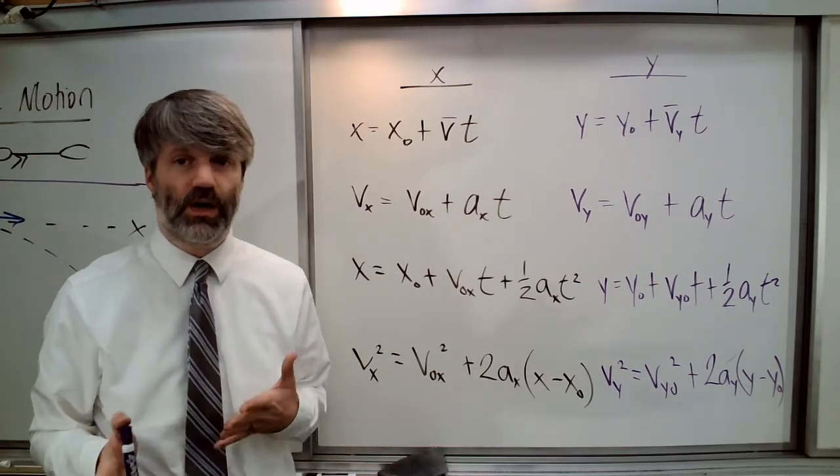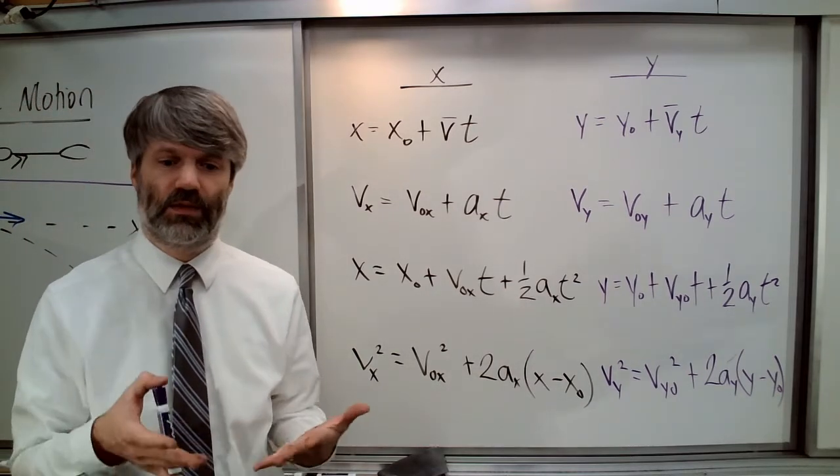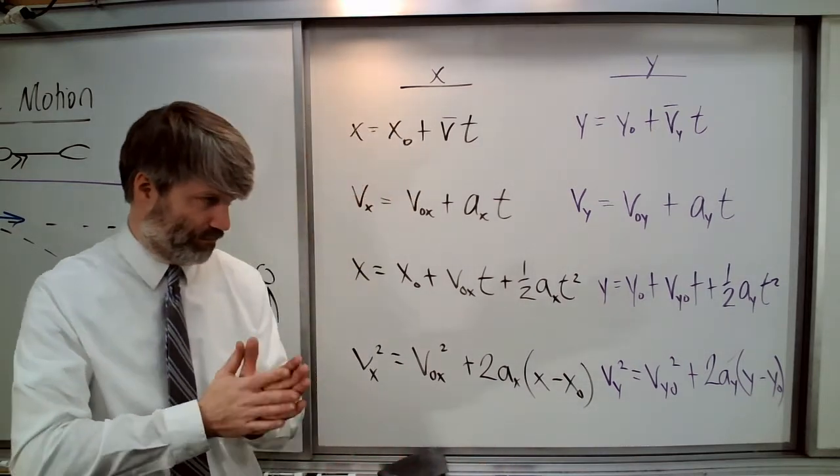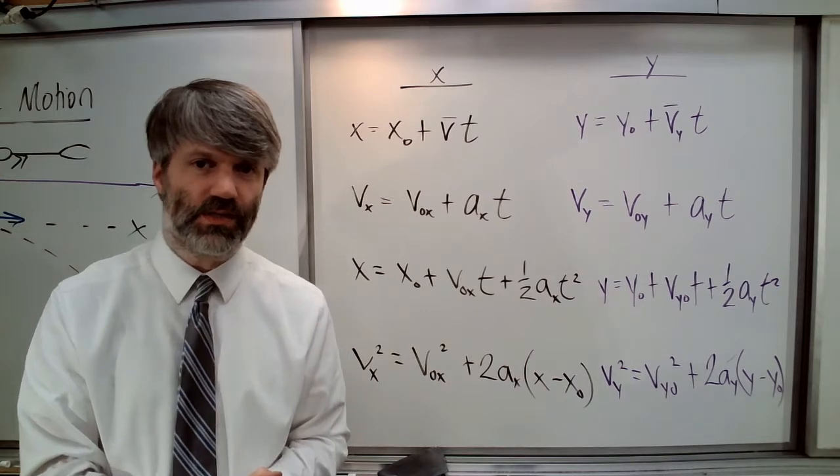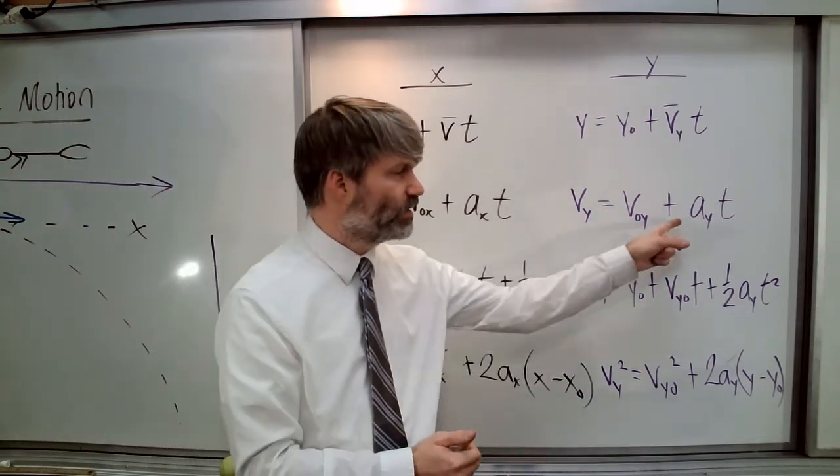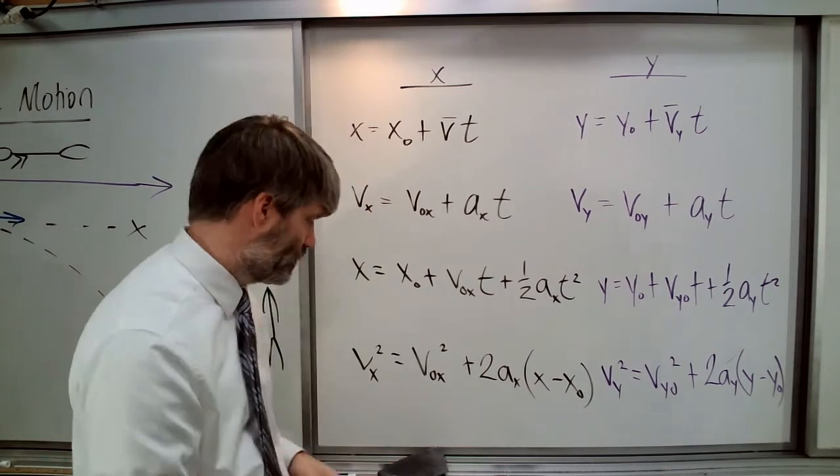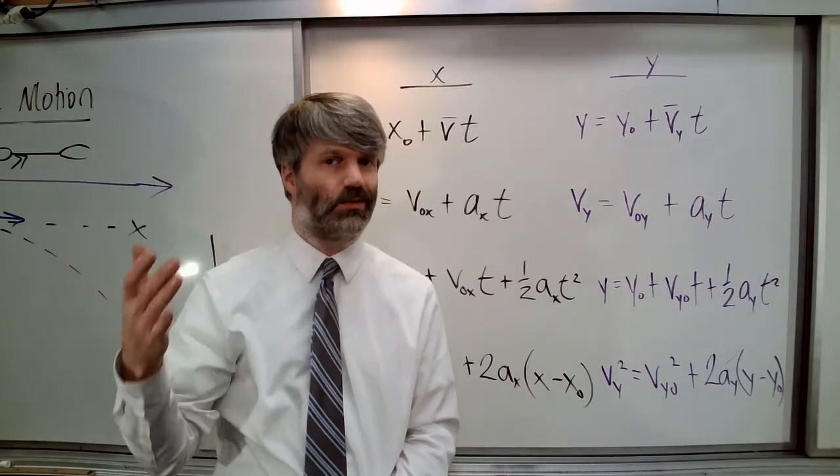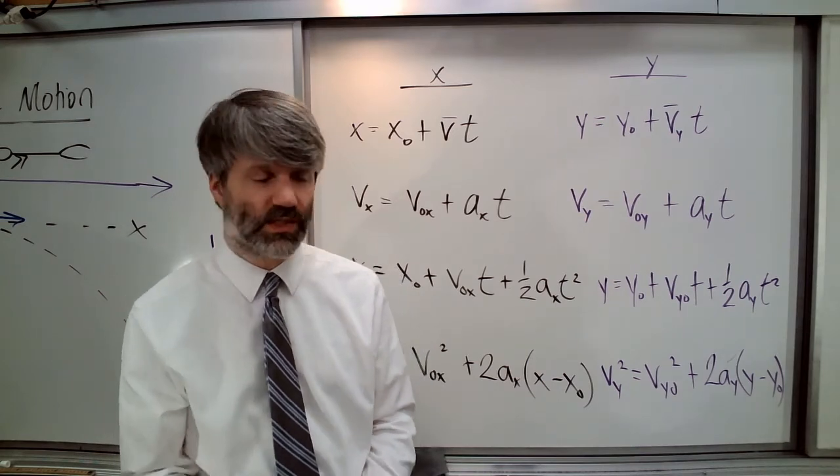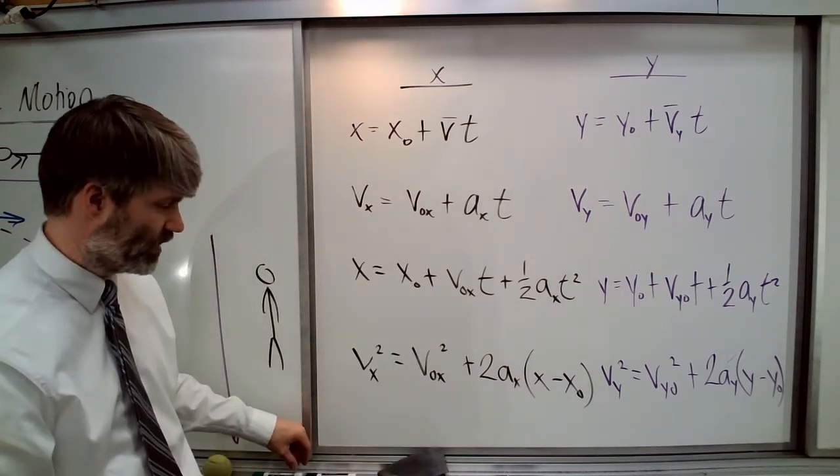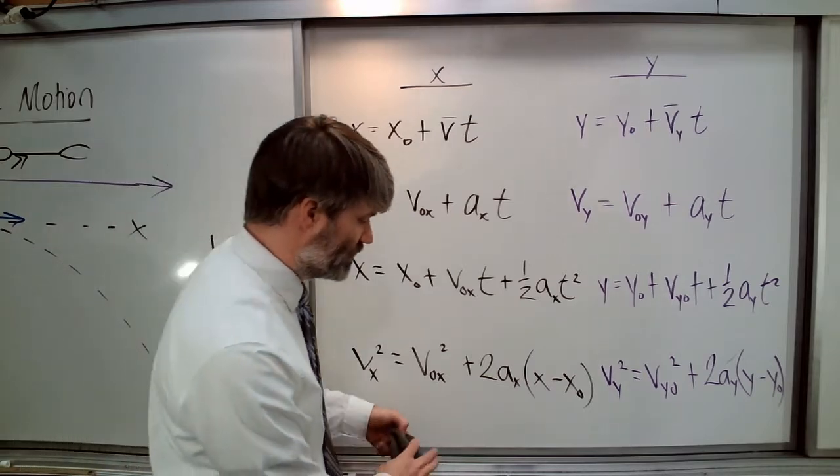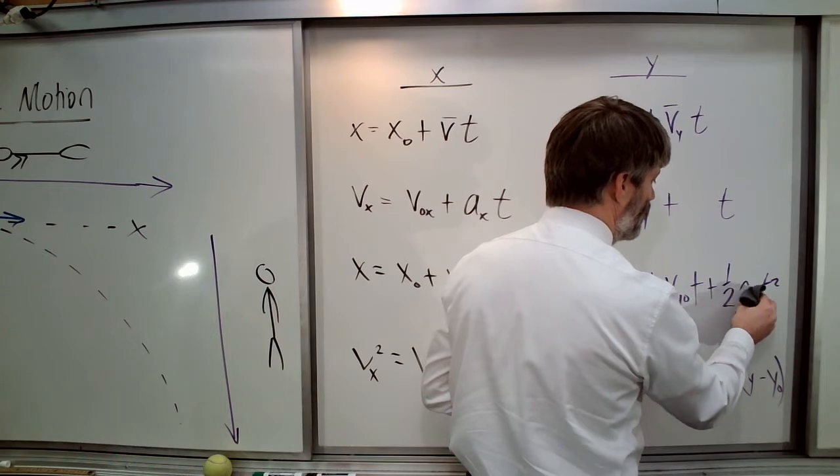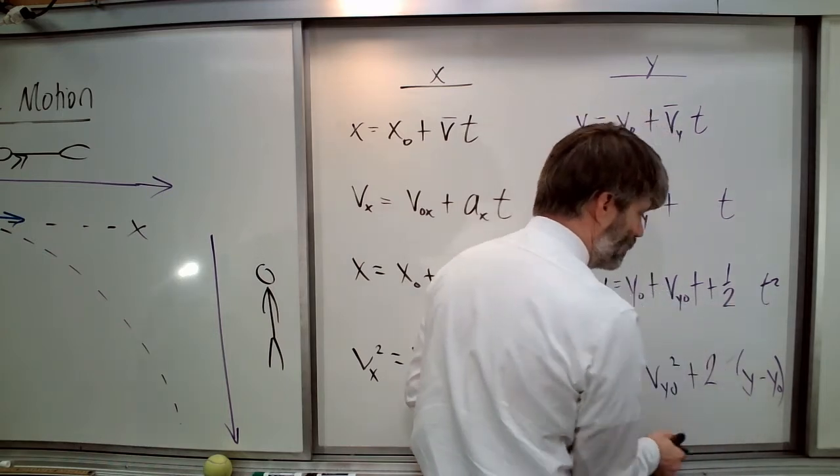So we can choose from either one of these sets of equations to analyze the motion one dimension at a time. Now there's something nice about this because we know the acceleration in the y-direction. What is the acceleration in the y-direction? It's gravity that's accelerating it, so it's the acceleration due to gravity. So I can replace all of these a sub y's here with g's.